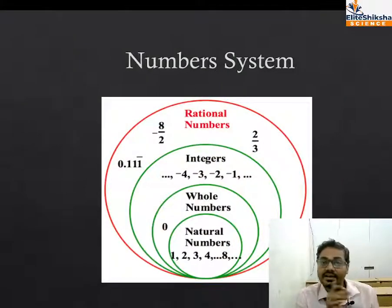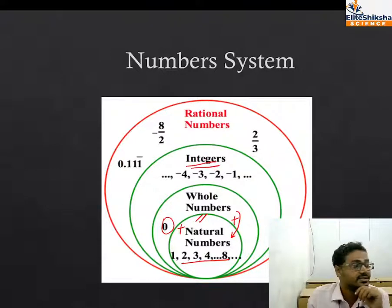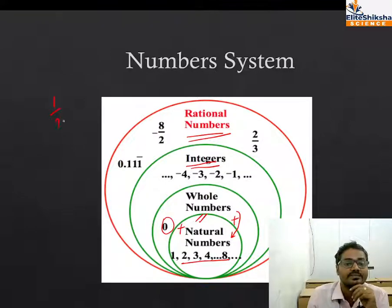We started with natural numbers - all positive numbers. When we added zero to them, they became whole numbers. Natural number plus zero equals whole number. Now when whole numbers along with negative values are included, it becomes integers. Natural numbers plus zero plus negative values equals integers. And then the final one is rational numbers. All numbers - whether 0.111 bar recurring, non-recurring numbers, minus 8 by 2, 2 by 3, 1 by 2, 1 by 5, 1.2 - these are rational numbers.